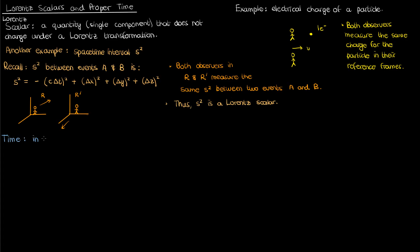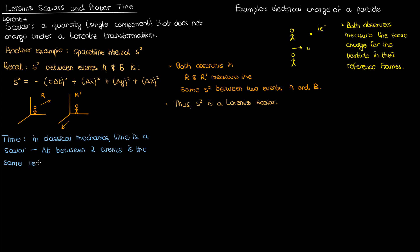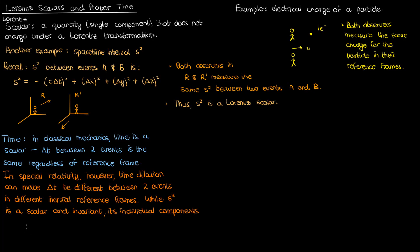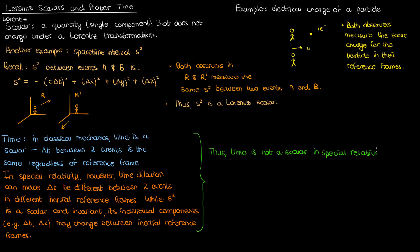Let's now talk about time. In classical mechanics, time was a scalar quantity, meaning the time interval delta t between two events was the same regardless of the reference frame. In special relativity, however, you have to deal with time dilation, which means the time interval observed between two events is not the same in every inertial reference frame. The spacetime interval s squared must be a Lorentz scalar and is the same in all frames, but its individual components — delta t, delta x, etc. — can change from one frame to another. So while s squared is guaranteed to be a Lorentz scalar, delta t is not, because it varies with a Lorentz transformation.